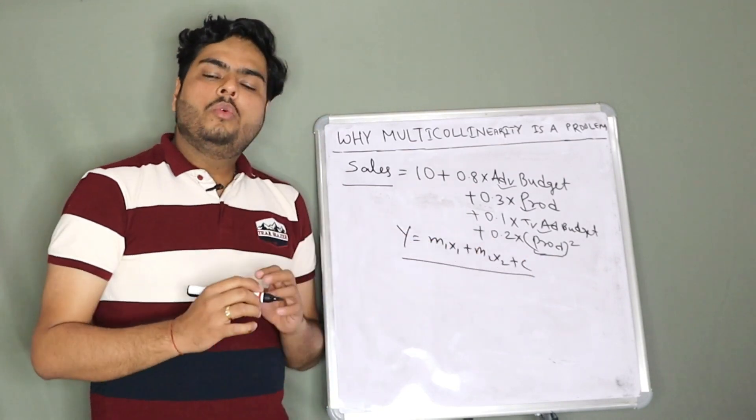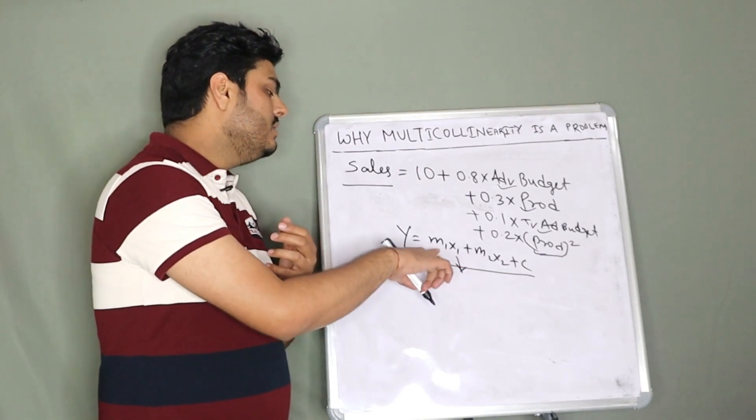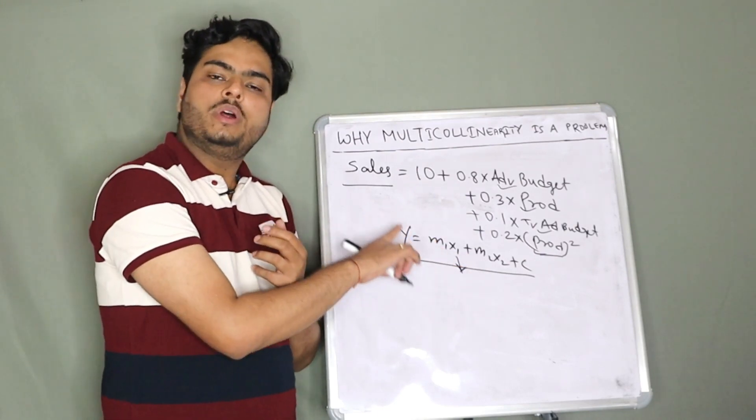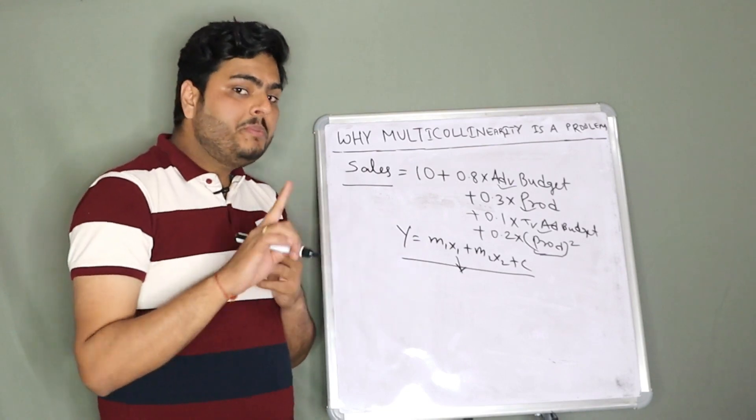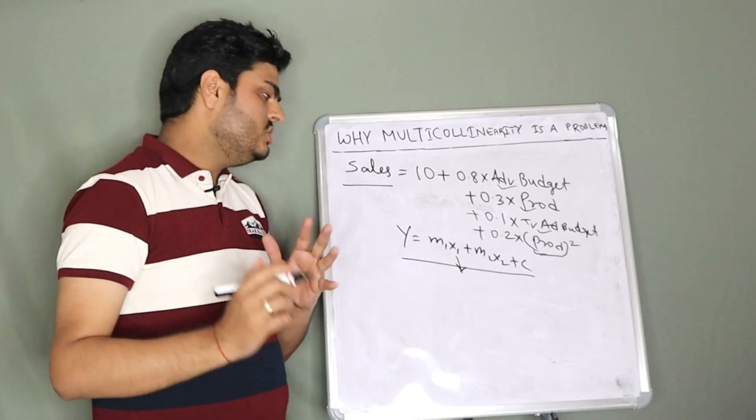What you say here is: for every unit increase in x1, y will shift by m1, keeping all other variables constant. This is the explanation of this m1.